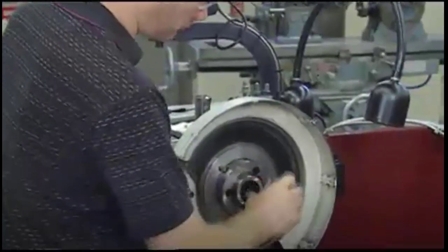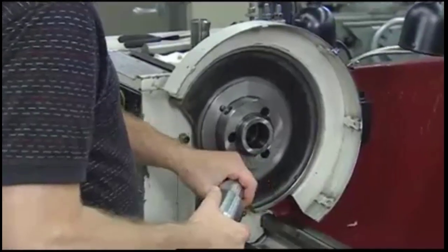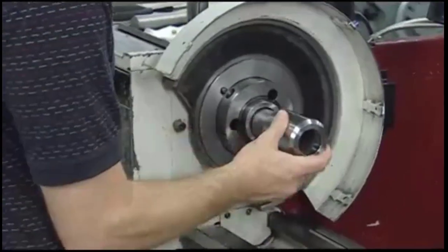To use a collet, begin by cleaning both the lathe spindle bore as well as the adapter. Then mount the tapered adapter in the spindle bore.